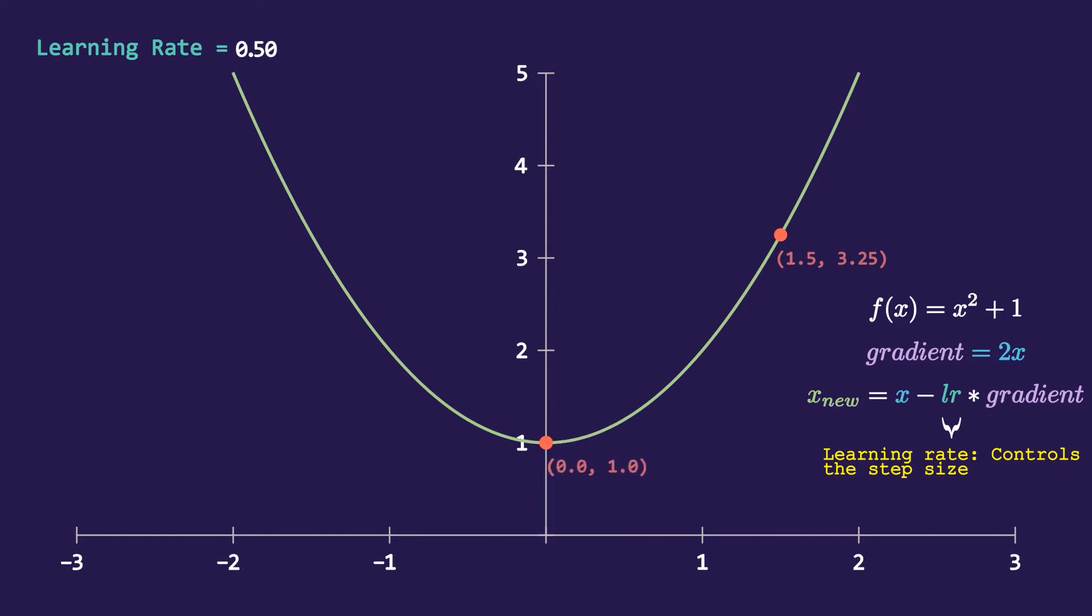At a learning rate of 0.5 it only took two steps to reach the actual minimum. But increasing the learning rate even greater has made the point to overshoot from the minimum and it is no longer able to reach the minimum.